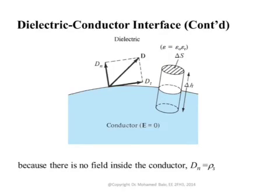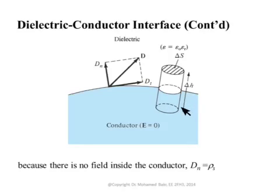Another result from the perfect conductor assumption comes from applying Gauss's law using a pill-shaped surface: the integral of D·dS over this surface equals zero. This gives three integrals — top disk, bottom disk, and side wall. The bottom disk gives zero because there is no field inside and hence no D. The side flux goes to zero as ΔH → 0, so only the top flux contributes, giving D_normal · ΔS.